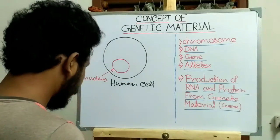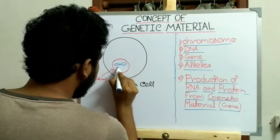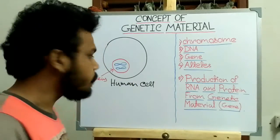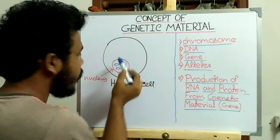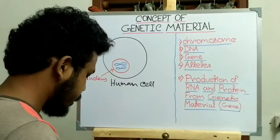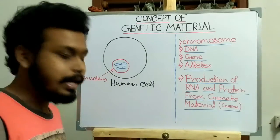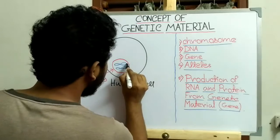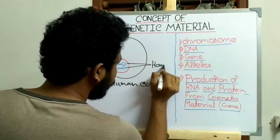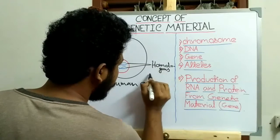Now suppose this and this is an identical chromosome pair — one comes from the father and one comes from the mother. This identical chromosome pair is known as the homologous chromosome.